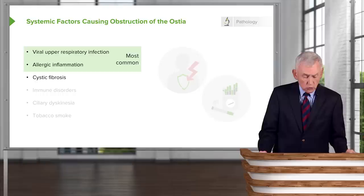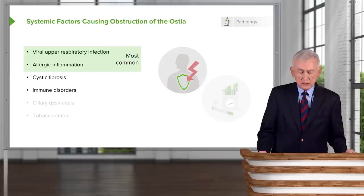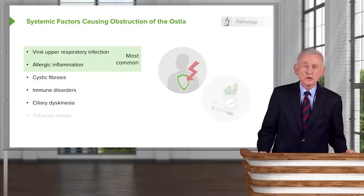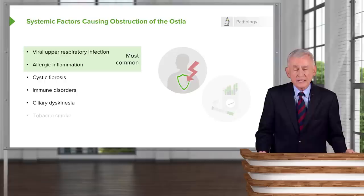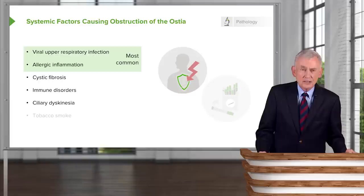There are a variety of immune disorders which affect ciliary action. There is this rather curious entity called ciliary dyskinesia, the most important manifestation of which is Kartagener's syndrome. Kartagener's syndrome is the constellation of sinusitis, situs inversus, and bronchiectasis.